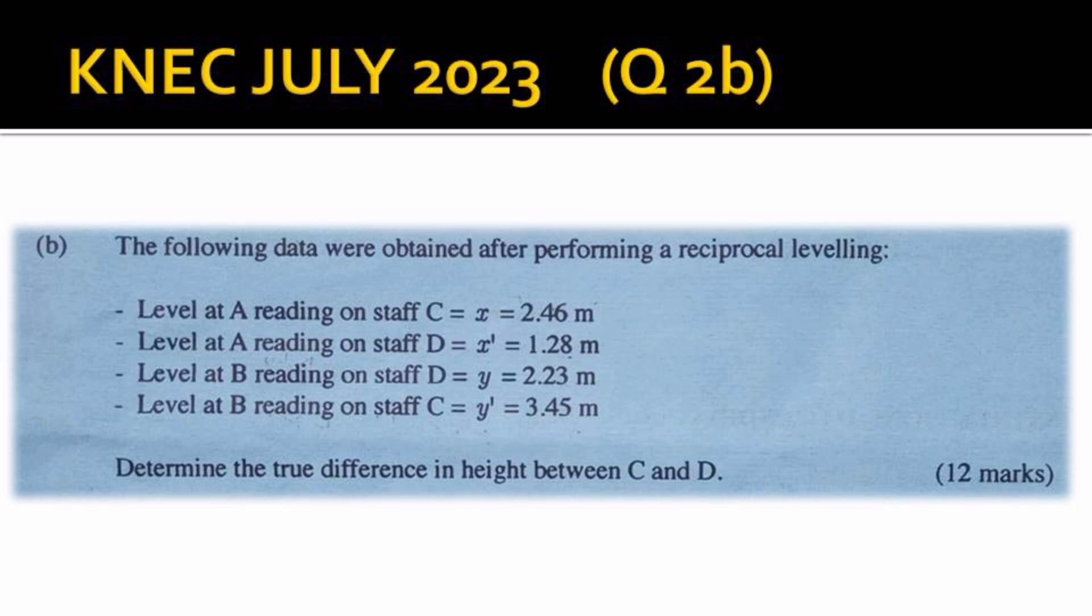The question goes: The following data were obtained after performing a reciprocal leveling. This question was not seen much in previous years - it was observed earlier in 2010, then it was rested, but they decided to bring it back. Level at A reading on staff C = 2.46 meters, level at A reading on staff D = 1.28 meter, level at B reading on staff D = 2.23 meters, and level at B reading on staff C = 3.45 meters.